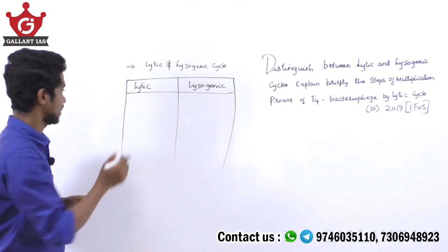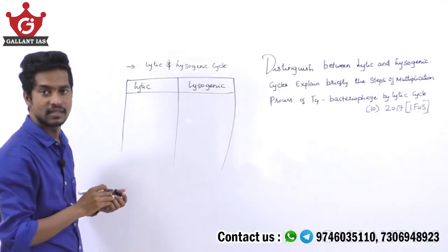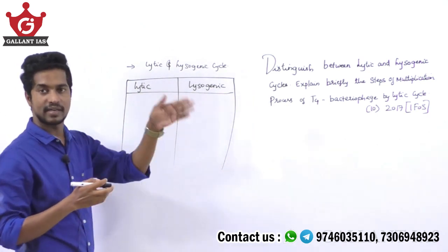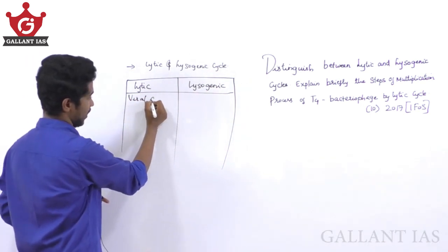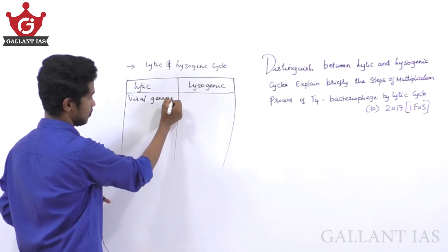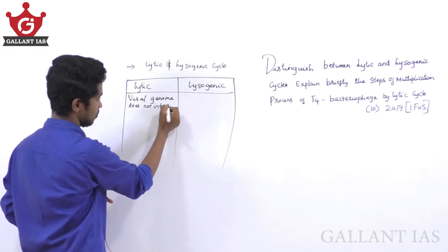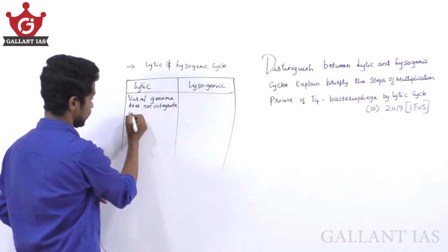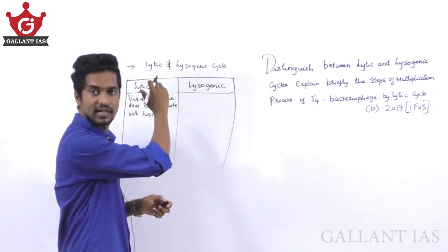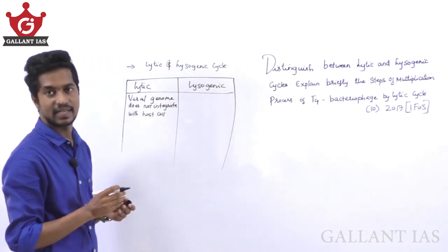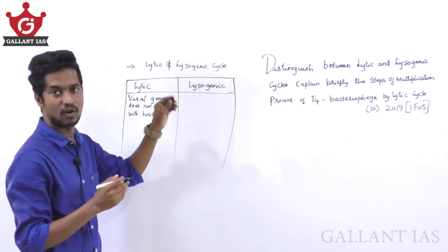You need to mention at least four to five differences between lytic and lysogenic cycle. The first difference is the viral genome: in the lytic cycle, the viral genome does not integrate with the host cell, whereas in the lysogenic cycle the viral genome is integrated with the host cell — the integration of the viral genome with the bacterial genome.